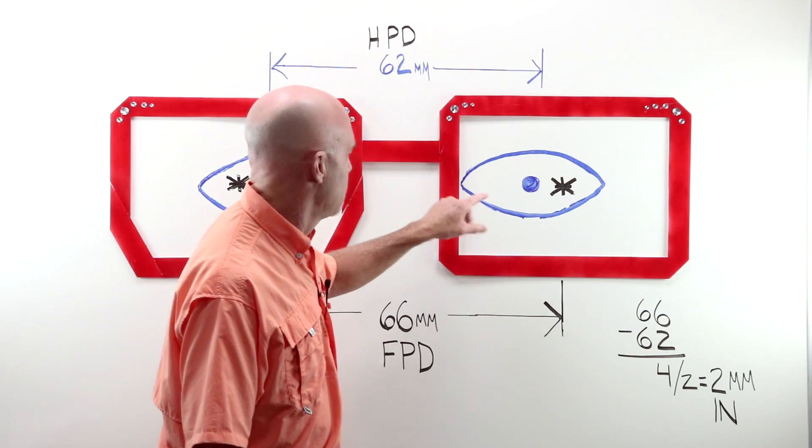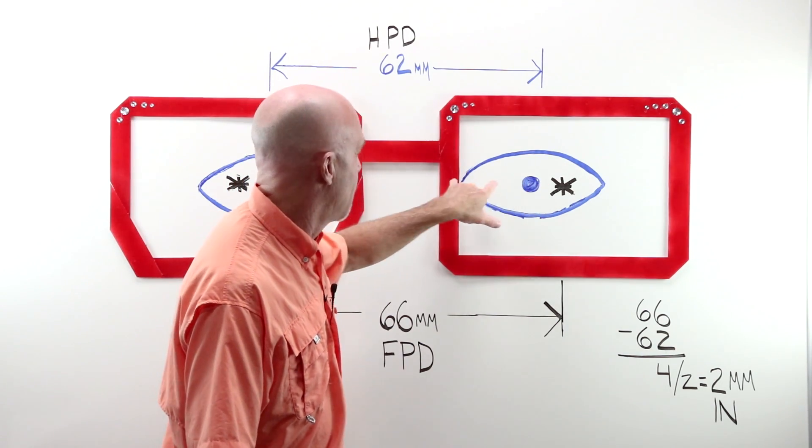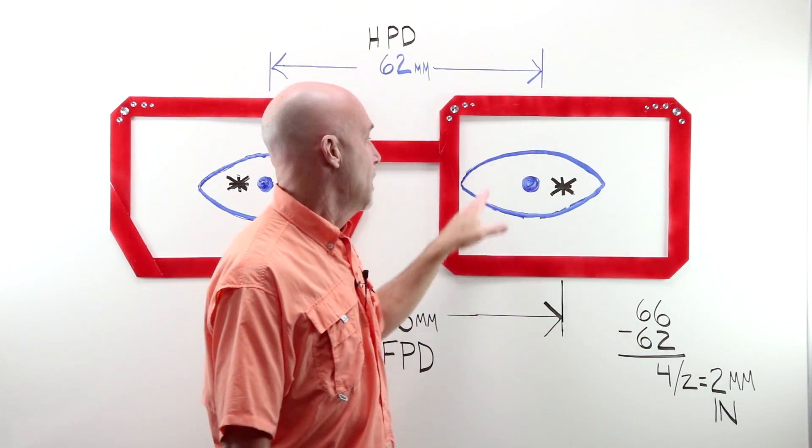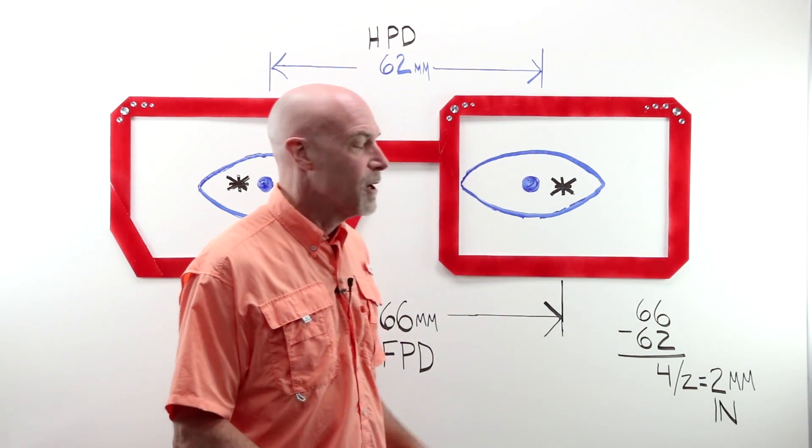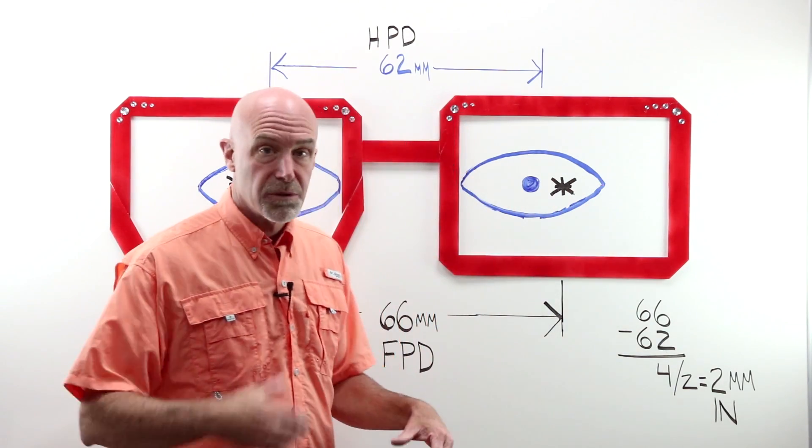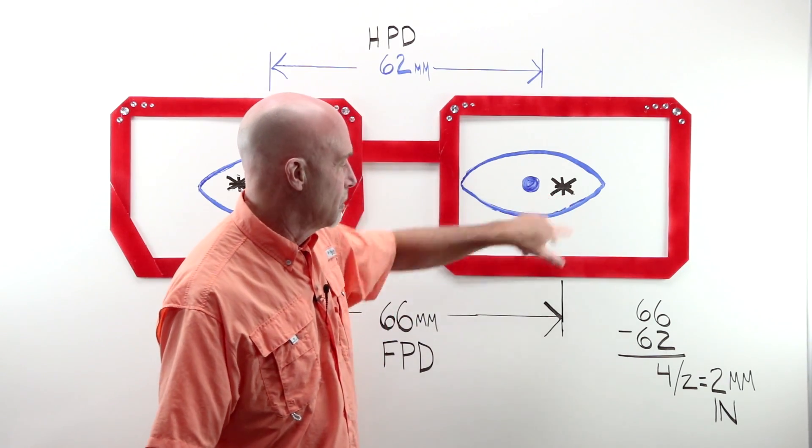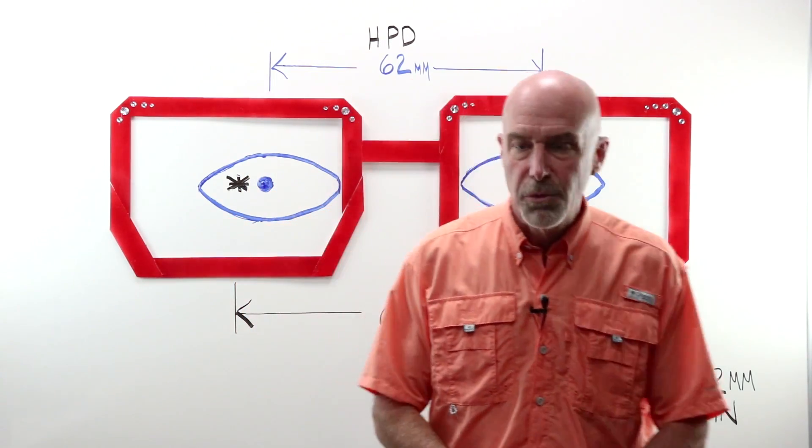That happens most when you have a very narrow PD in a small frame. You put your block on and the feeler comes out to trace, make sure you have enough lens to cut out. It hits the block. You can physically move the block over, out of the way, the amount of decentration if you do it manually.